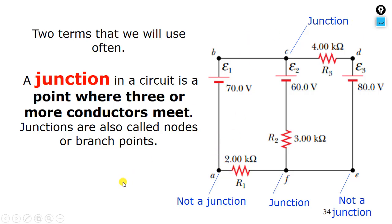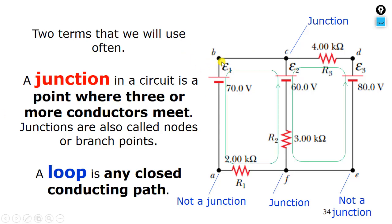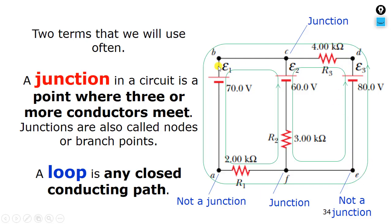The second term we are going to use often is a 'loop.' A loop is any closed conducting path. For example, c-d-e-f back to c is one loop. Or b-c-f-a back to b is also one loop. We might also have the outer loop: d-b-a-e back to d. Any closed path is considered a loop.